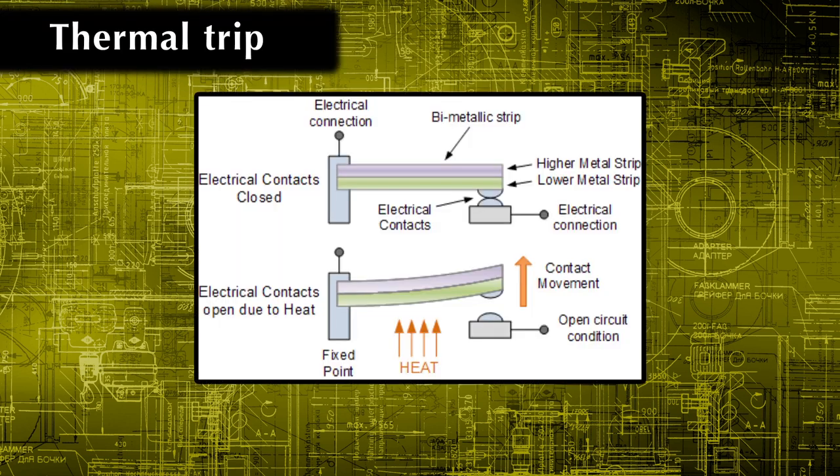While the thermal part consists of a bimetallic strip. So when overload current passes, it causes this strip to heat and bend. If it continues to a certain set duration, the strip will bend enough to trip the circuit.